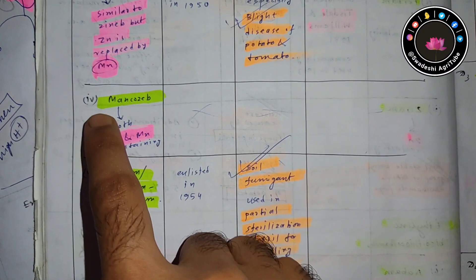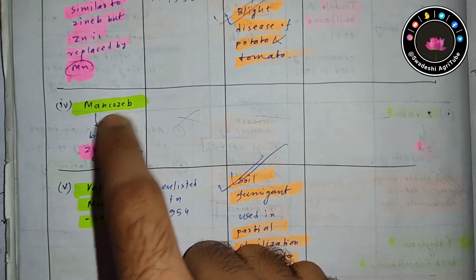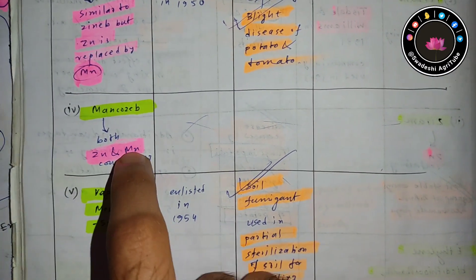The next one is mancozeb. It is one fungicide which actually has both zinc and manganese. This is important.